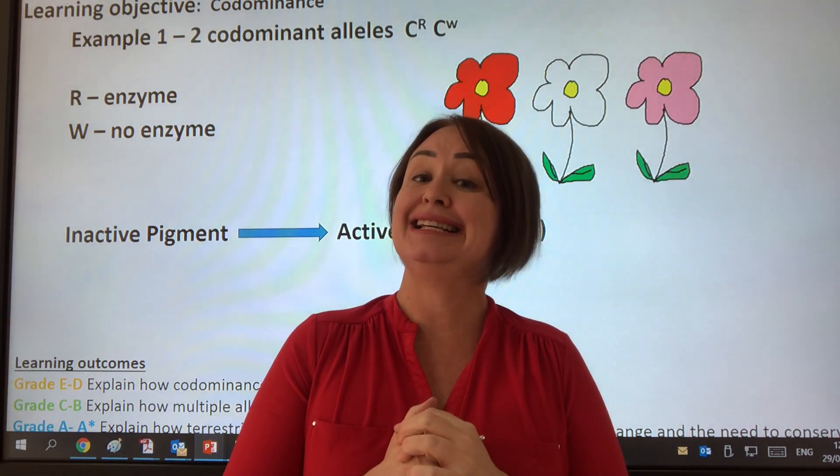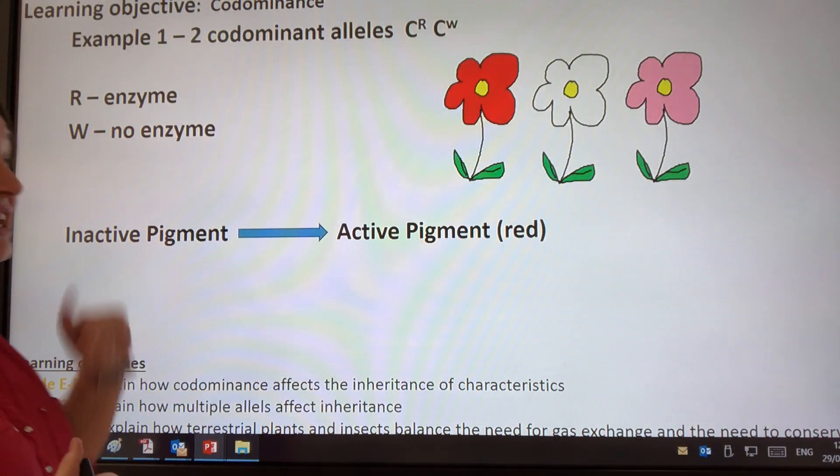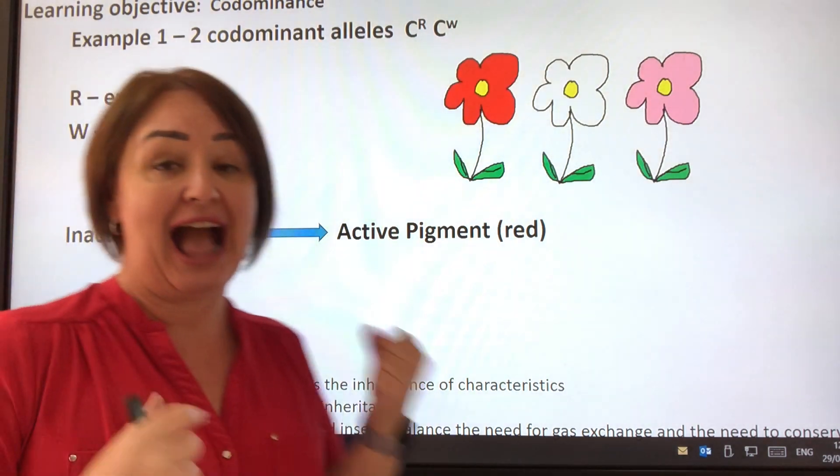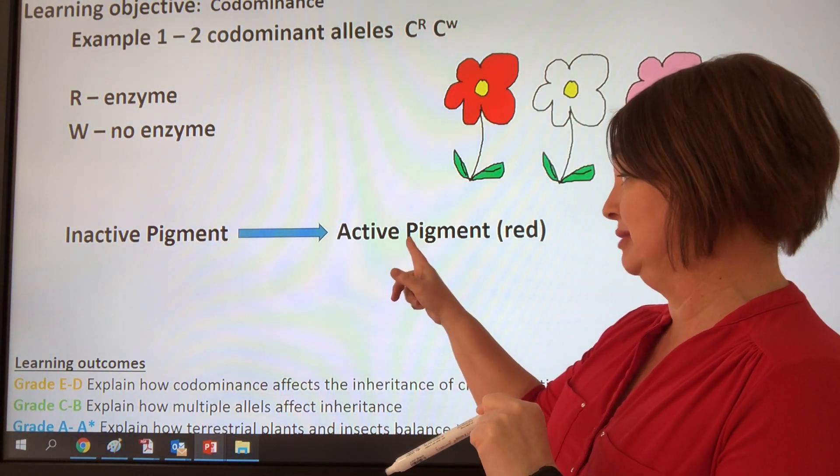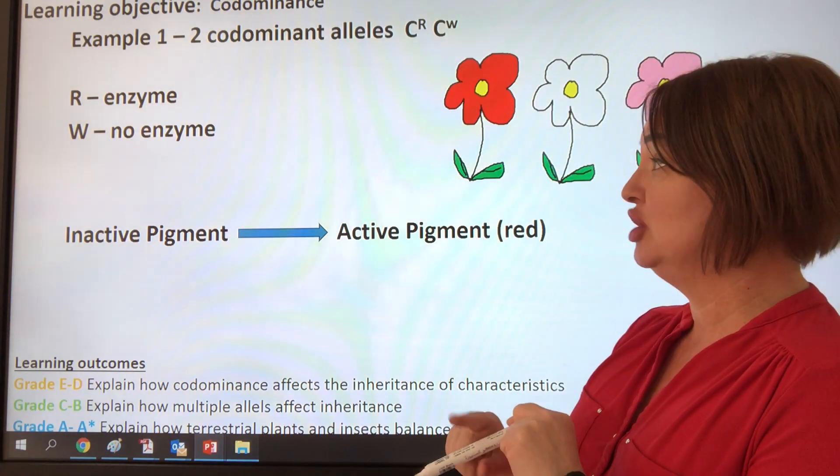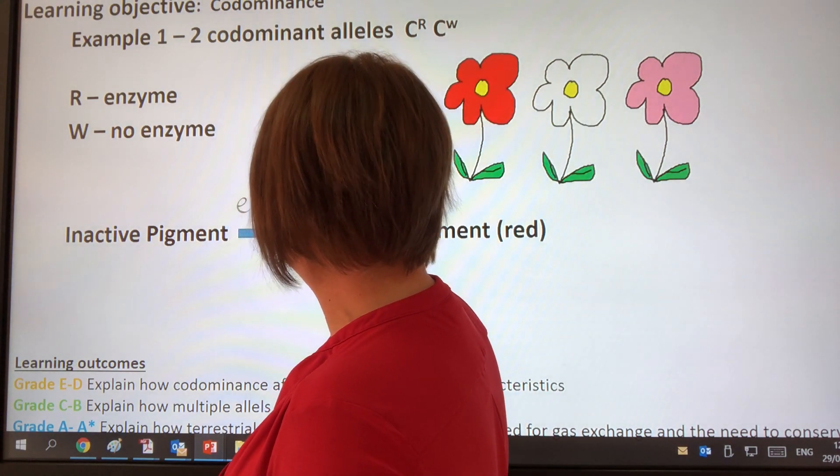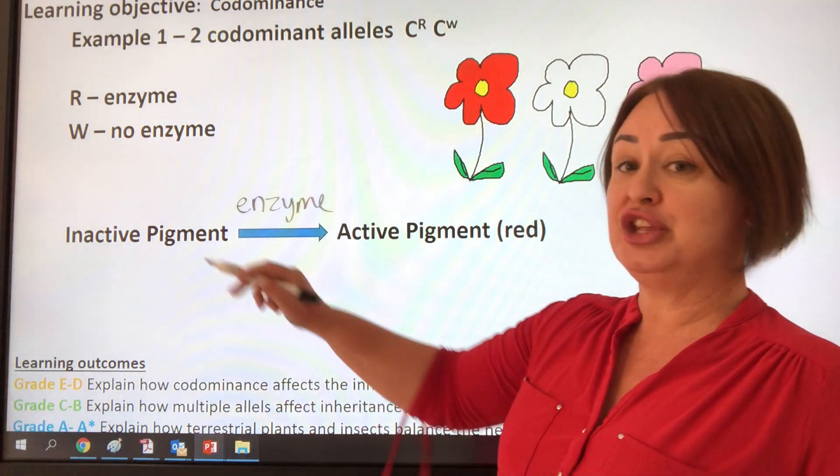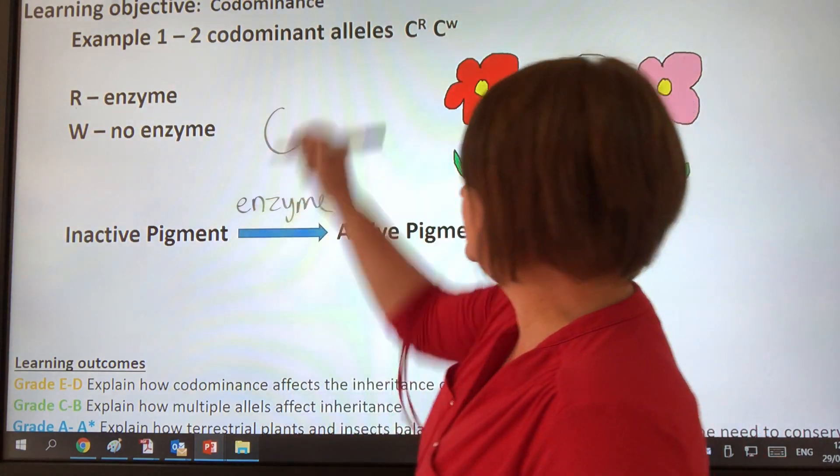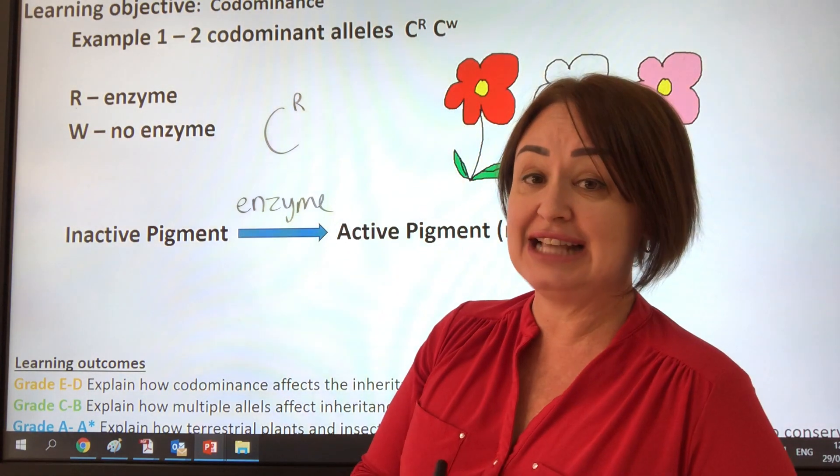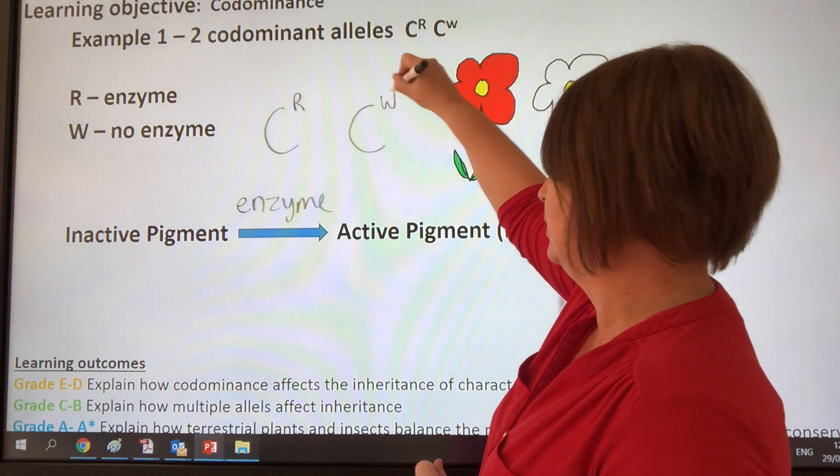The example we're looking at is in the color of petals. What actually happens is that there is an inactive pigment, and if you have the allele to code for this particular enzyme, then the inactive pigment is changed to an active pigment. The active pigment is red. So our allele actually codes for an enzyme. For the enzyme, we're going to use the code CR. So we're coding for the color of petals. And equally, without the enzyme, we're going to use CW.